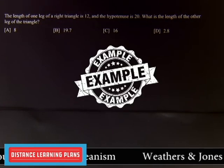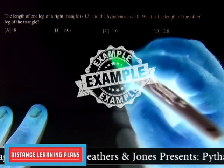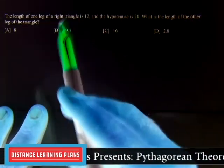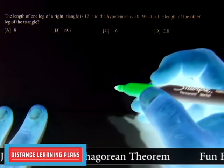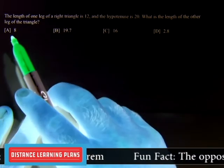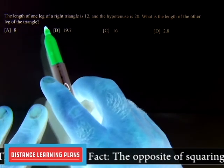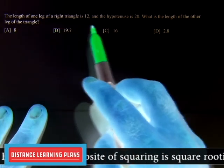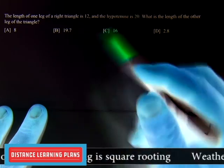Alright, for example 4, we were not given the triangle again, we weren't given an image, so we're going to have to draw our own triangle. So we'll read the question, the length of one leg of a triangle is 12, and the hypotenuse is 20.